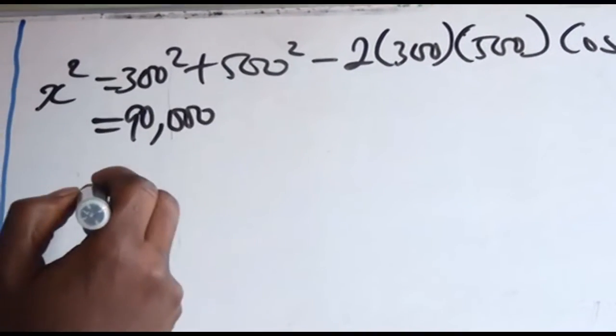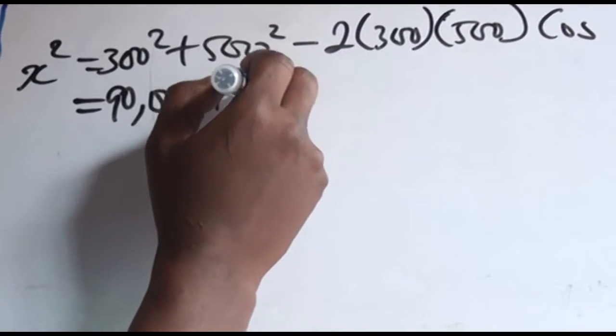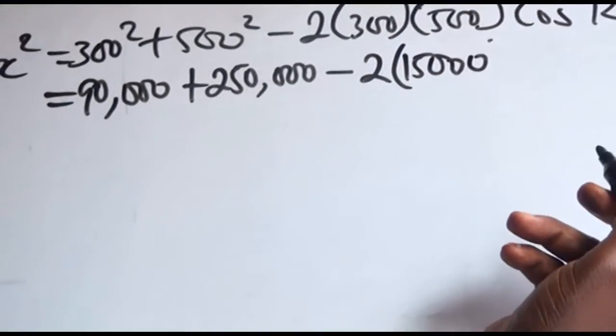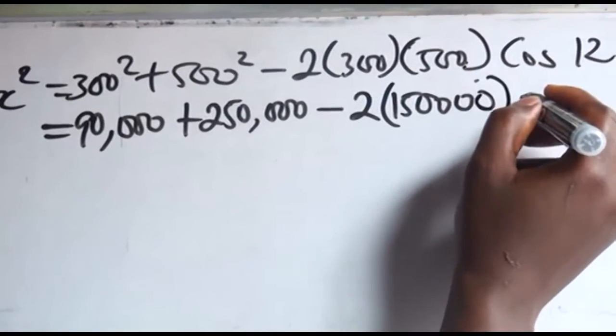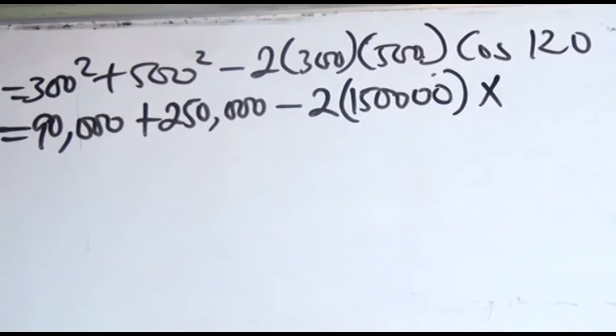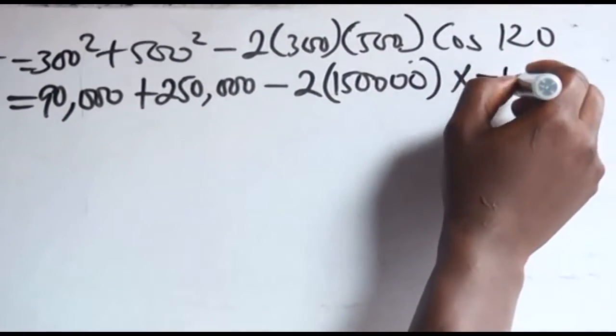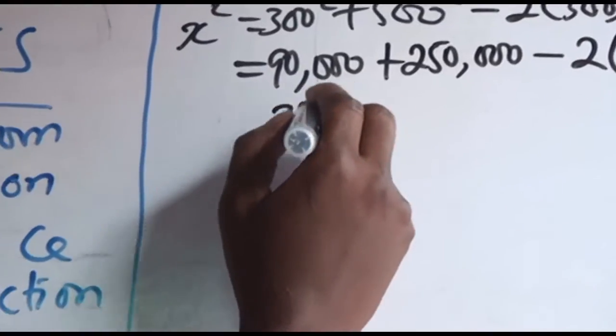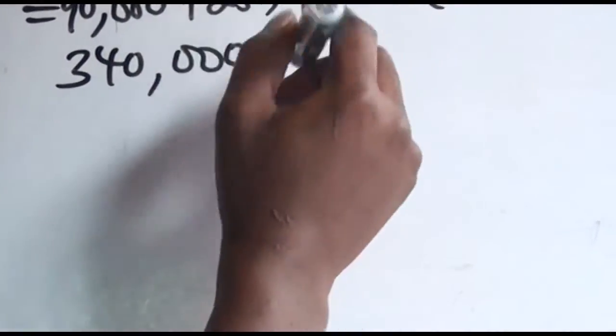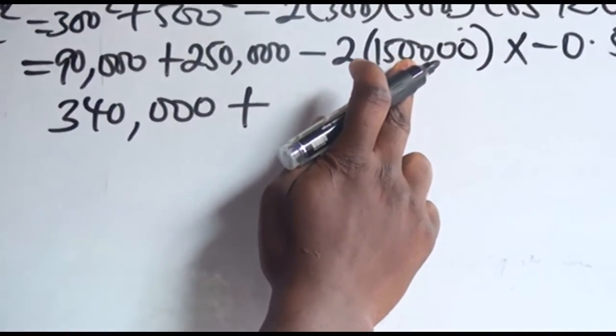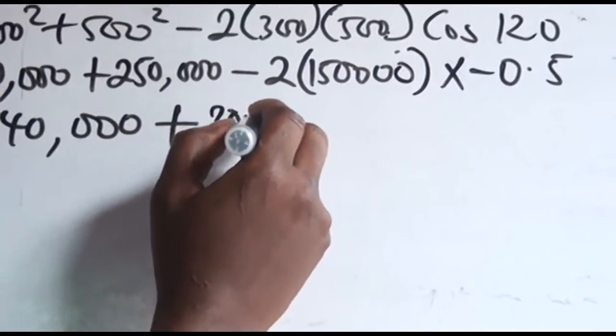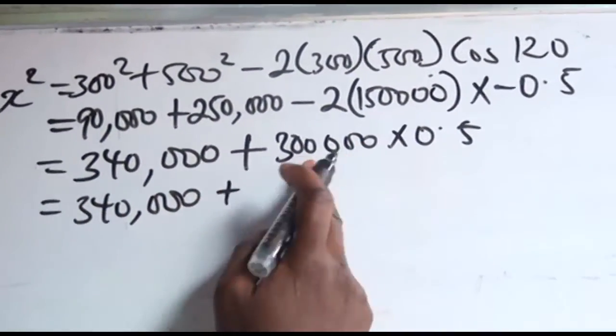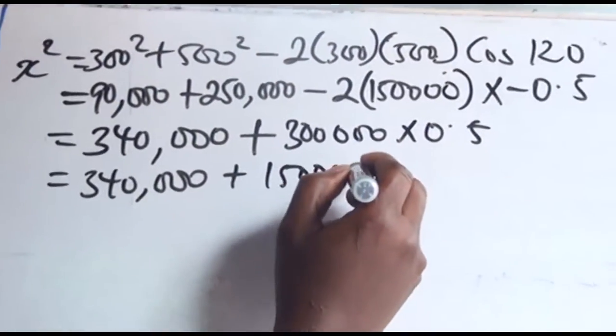Here I'm going to get 90,000. Here I'm going to get 500 squared, 250,000 minus this. Here I'm going to get 150,000. That's 150,000. Then what is my cos? Cos 120. My cos 120 is going to be minus 0.5. Now this together is going to give me 90 plus 250, I'm going to get 340,000. Minus times minus is going to be plus. As you know, half times this is going to be what? This will be 300,000 times half. Then 340,000, half of 300,000 is going to be 150,000.